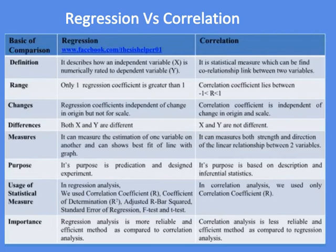In regression analysis, we use the correlation coefficient r, coefficient of determination r squared, adjusted r-bar squared, standard error of regression, F-test, and t-tests. While in correlation analysis, we use only the correlation coefficient r.